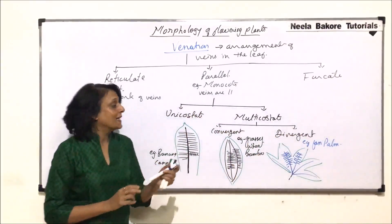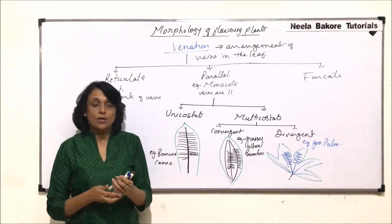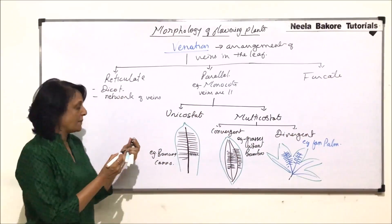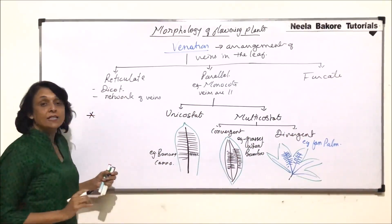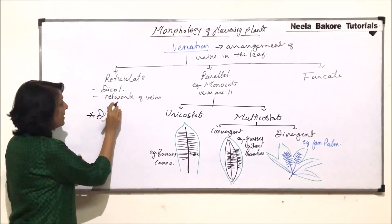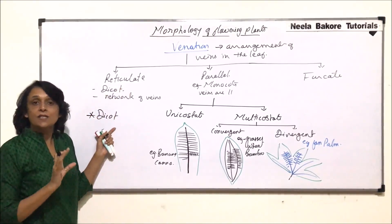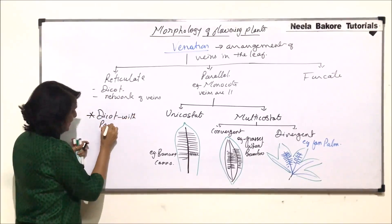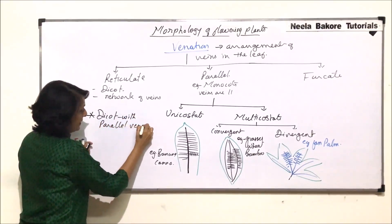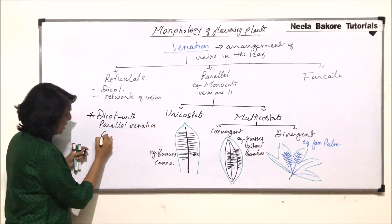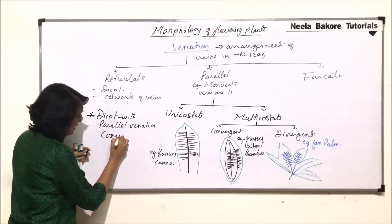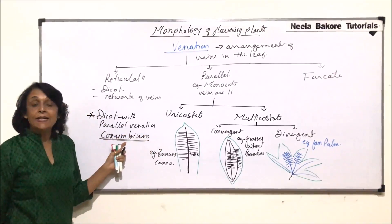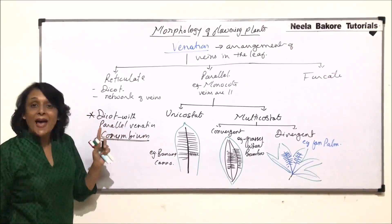These are the types of parallel venations. Now, after understanding reticulate and parallel venation, we will take some exceptions. Exception means a dicot where reticulate venation is the characteristic feature but showing parallel venation — that is corimbium. This is a dicot plant in which we find parallel venation, so this comes as an exception.